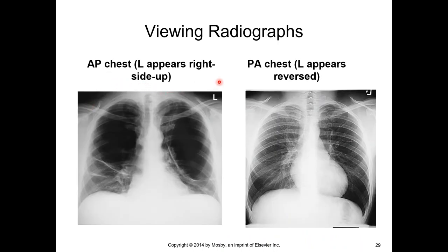For chest x-rays: AP chest x-rays show with the L appearing in the correct direction to the viewer. For PA chest x-rays, if you don't flip the L around backwards when you place the marker, it's going to appear backwards when you put the PA up for viewing. My advice is: if you know you're doing PA, flip the L around the other direction so it shows up facing the correct direction when viewing your soft copy digital image.